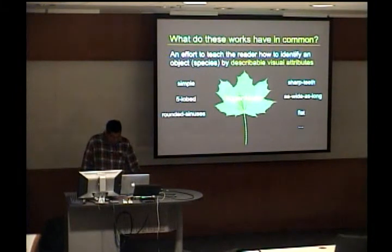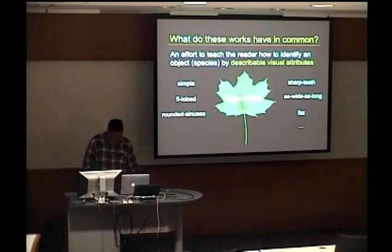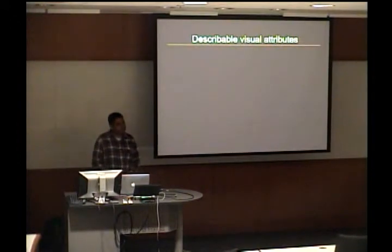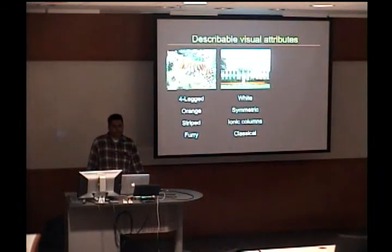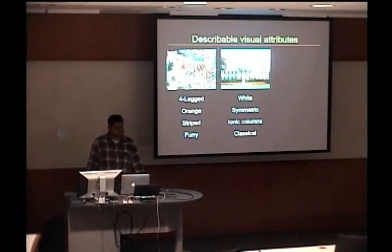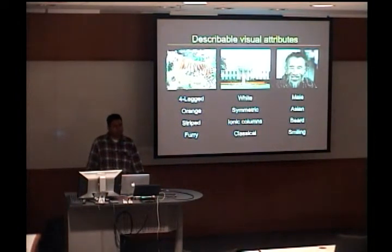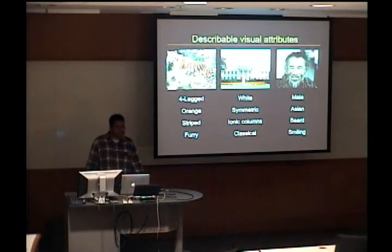This seems like one way of describing things, but why is it particularly better than any other? I think there are a couple of reasons why describable visual attributes are very attractive. You can apply this to many different types of objects. You could describe animals — for example, this tiger — as having four legs, being orange, striped, and furry. In a completely different domain, like architecture, you could describe the White House as being white, symmetric, with ionic columns, and built in classical style. And in the domain I'm going to talk about today, faces, we use attributes all the time — that's the primary way we describe people: this person is male, he's Asian, he has a beard, he's smiling, and so on.